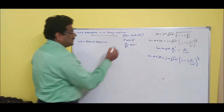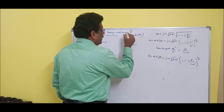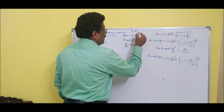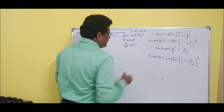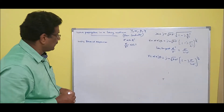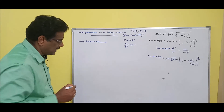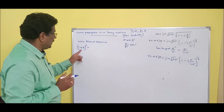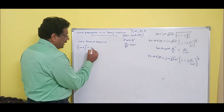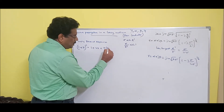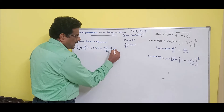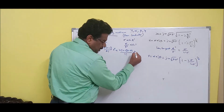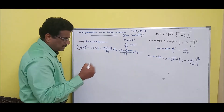Our aim is to find propagation constant gamma, attenuation constant alpha, phase constant beta, and intrinsic impedance eta. By expanding using the binomial expansion, 1 plus x to the power n equals 1 plus nx plus n(n-1)/2! * x² plus n(n-1)(n-2)/3! * x³ plus ... Considering x is much less than 1, with n equals one-half and x equals minus j*sigma/(omega*epsilon-dash).